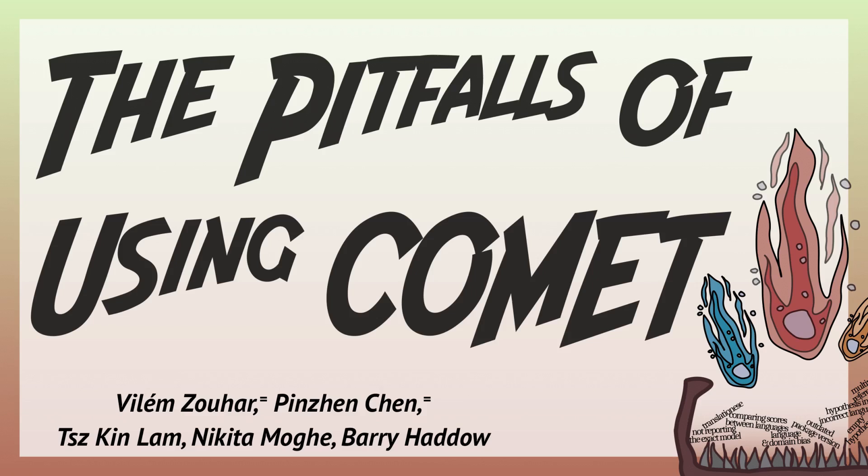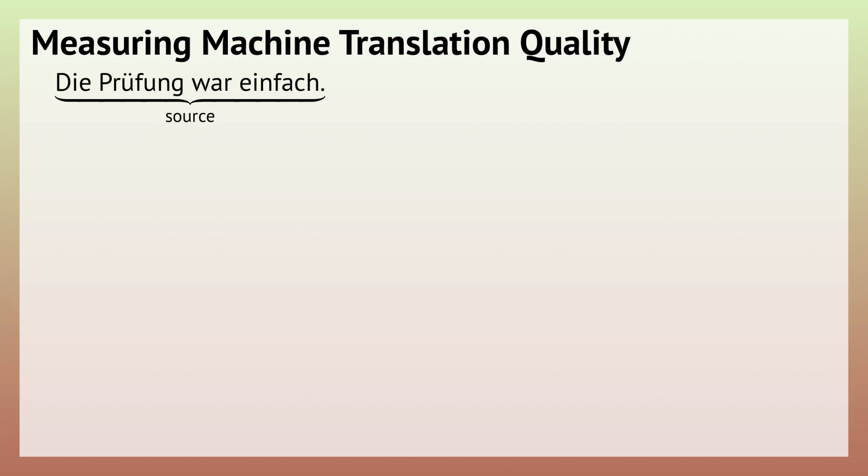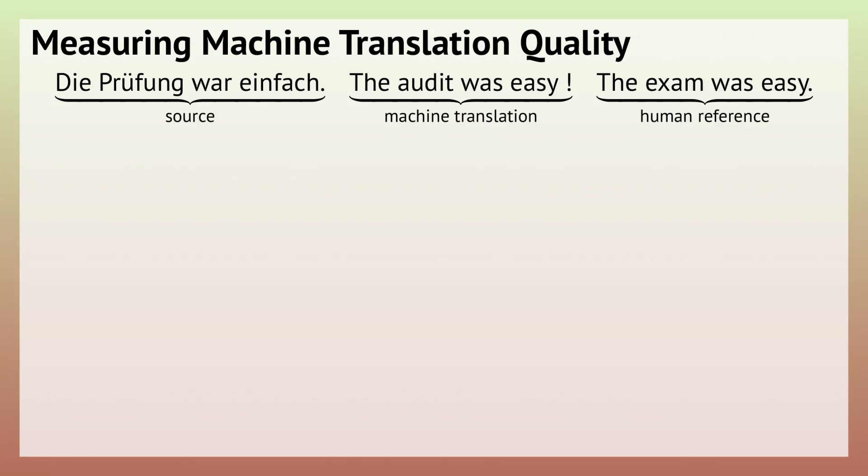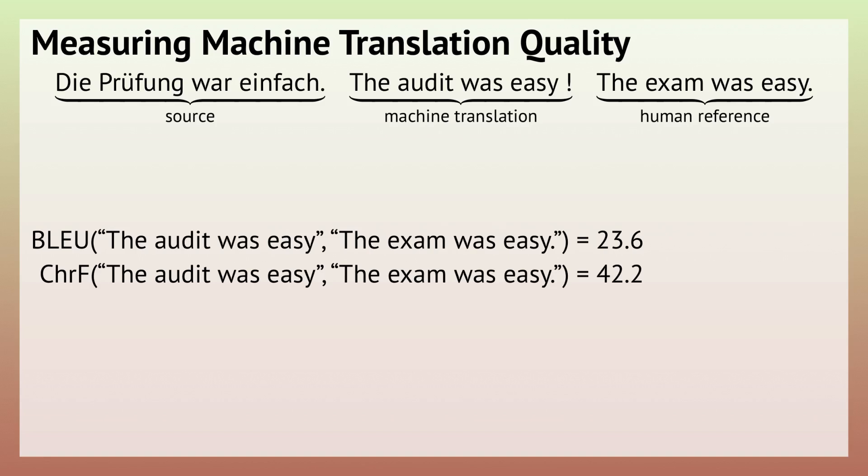To understand COMET, we first need some background on how machine translation systems are evaluated. Traditionally, given a source, the system produces a translation. In the past, we would compare the translation with a high-quality human translation and measure some lexical overlap, which would roughly tell us if the system is doing well or not.